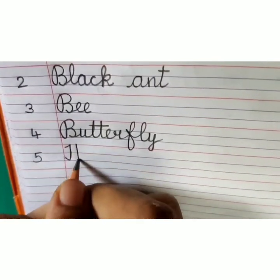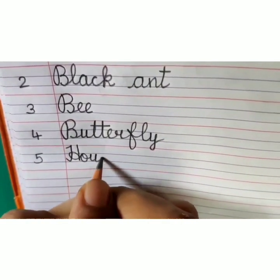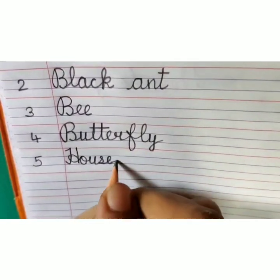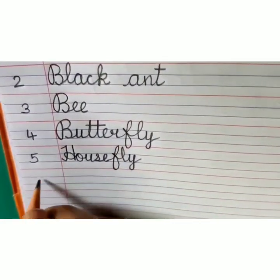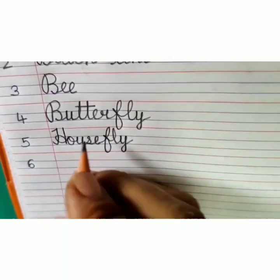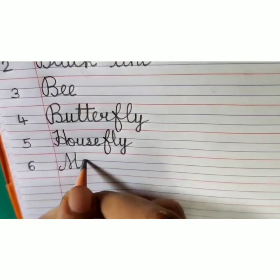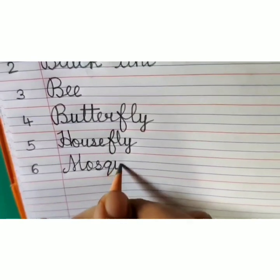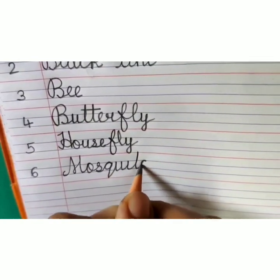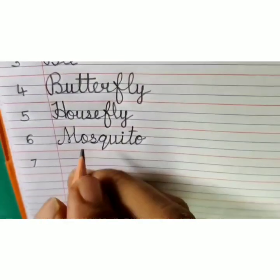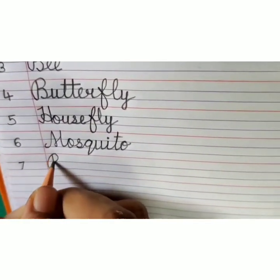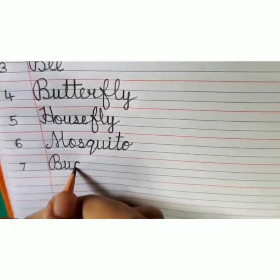Number 5, H-O-U-S-E-F-L-Y, housefly. Number 6, M-O-S-Q-U-I-T-O, mosquito. Number 7, B-U-G, bug.